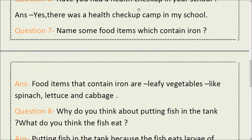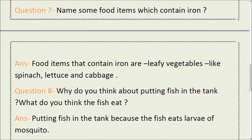Question number 7: Name some food items which contain iron. Answer: Food items which contain iron include leafy vegetables such as spinach and cabbage, as well as other vegetables.